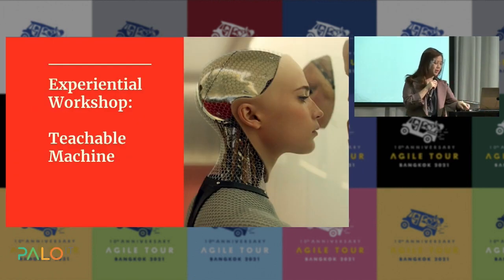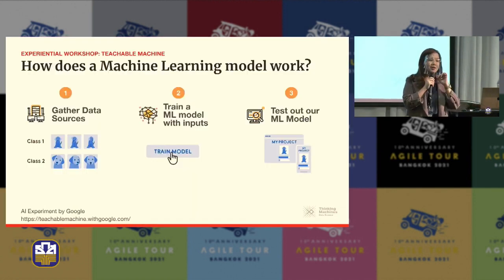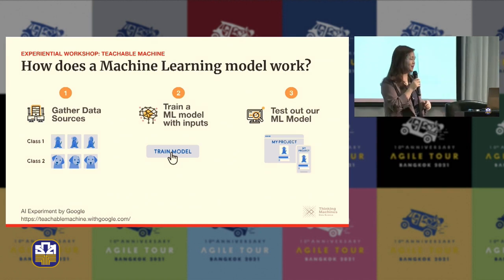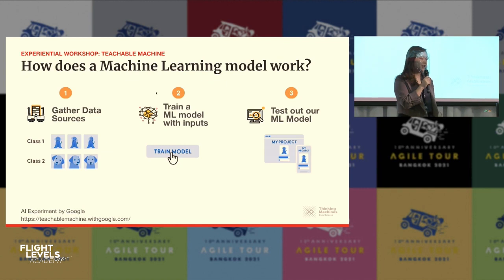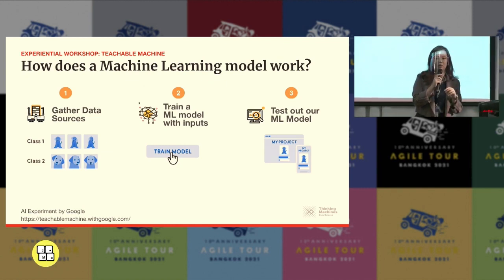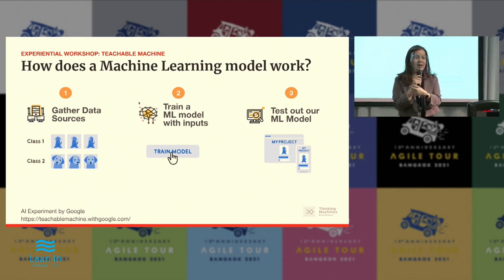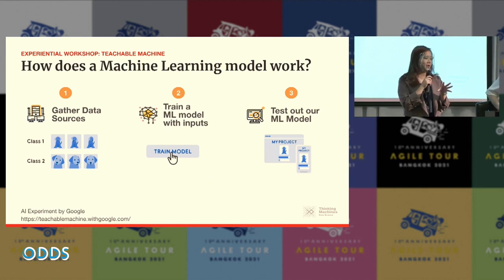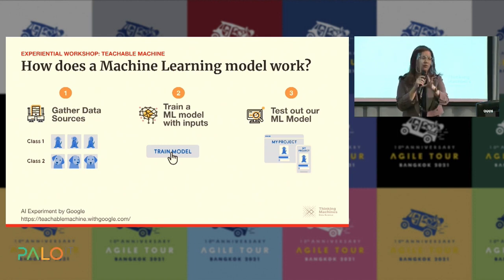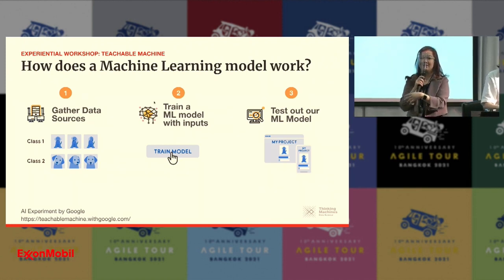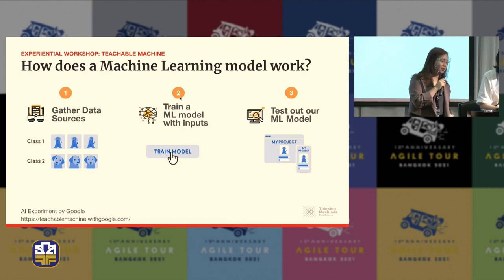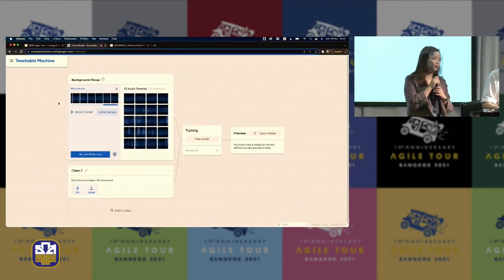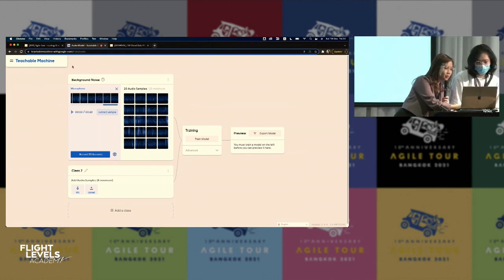The next part I want to show you quickly is a tool called Teachable Machine. This is where you can actually build your own model at home — it's really easy. Teachable Machine requires just three simple steps: you go into the tool, put in your data source, click train, and then test it out. I'm going to do a live demo. Hope it works today. The tool is from Google and helps you build simple models for image recognition, voice recognition, and pose detection.